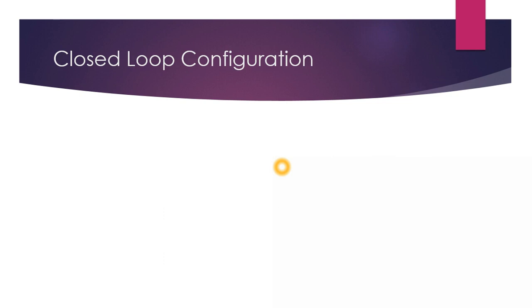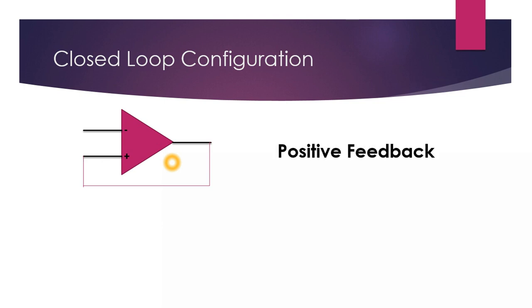Next is the closed loop configuration of the op-amp. Observe this diagram carefully. What we have done is provided a feedback from the output to the non-inverting or the positive terminal of the op-amp. As we observe, there is a loop present seen here, and as a result this is the closed loop configuration. And because the feedback is provided to the positive input, it is the positive feedback arrangement.